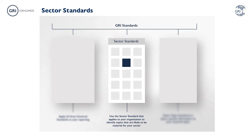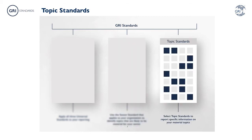The Sector Standards – our focus for today – will provide information on the most likely material topics for organisations in a given sector. And finally, the Topic Standards, which include disclosures that provide information on particular topics. An organisation selects and uses the Topic Standards that correspond to the material topics it has identified.